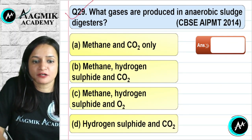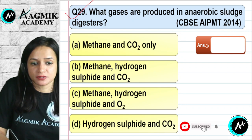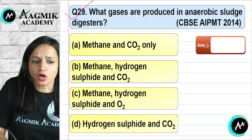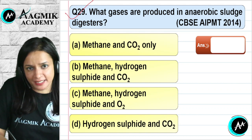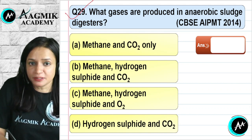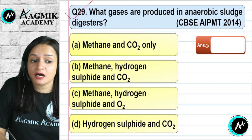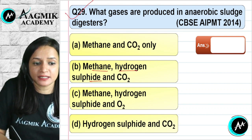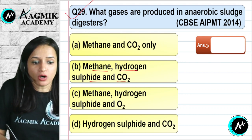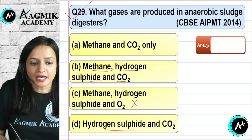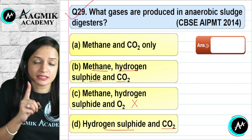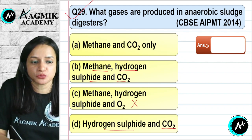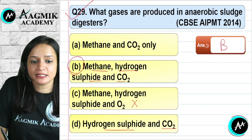Question number 29: What gases are produced in an anaerobic sludge digester? In a biogas plant (an anaerobic digester with no oxygen), methanogens grow and produce methane (CH4), hydrogen sulfide, and carbon dioxide. The most important component is methane produced by methanogens. The correct option is B.